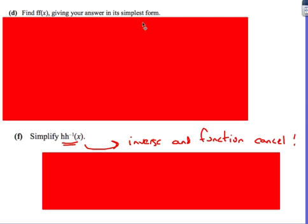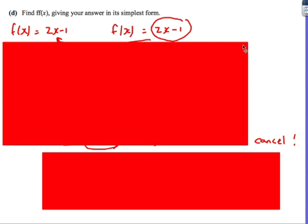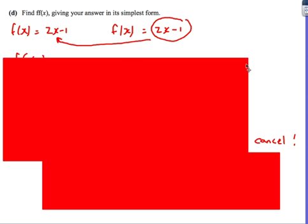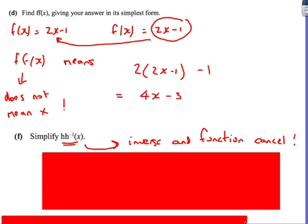Next one, find f of f of x. This is one that people find a bit more difficult. I would probably recommend actually just writing out the function twice. So f of x is 2x minus 1. Write it out again, f of x is 2x minus 1. The reason you can then do that is you can actually then see what's happening. So f of f of x basically means put f of x into the x that you see here. So f of f of x, replace the x here with 2x minus 1. So there we go, so I get 2 bracket 2x minus 1 minus 1.